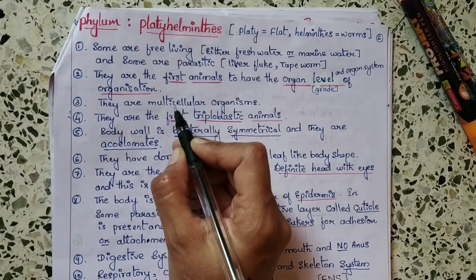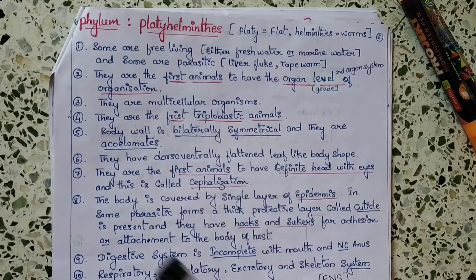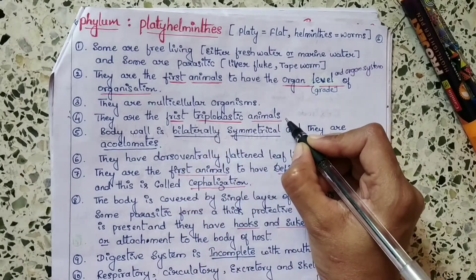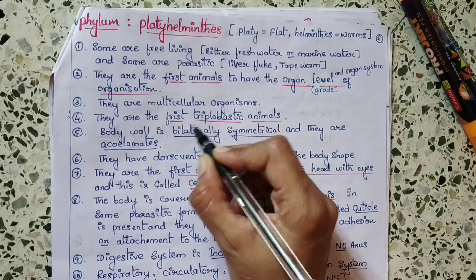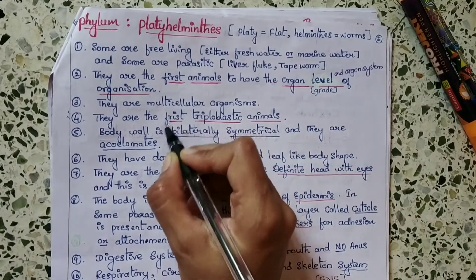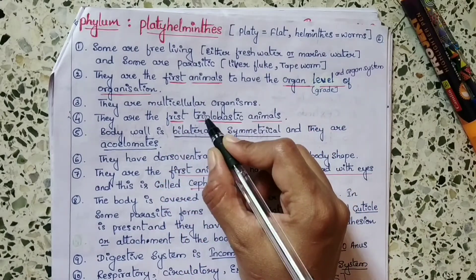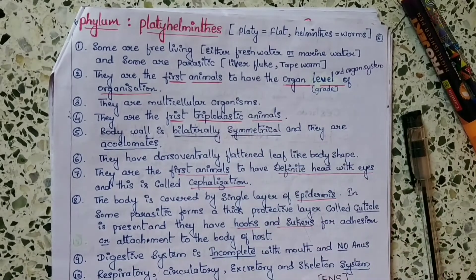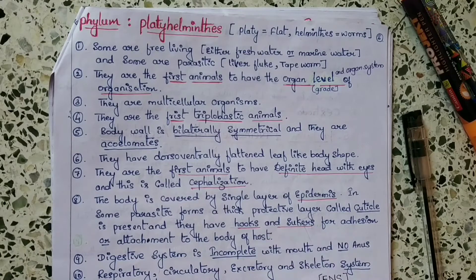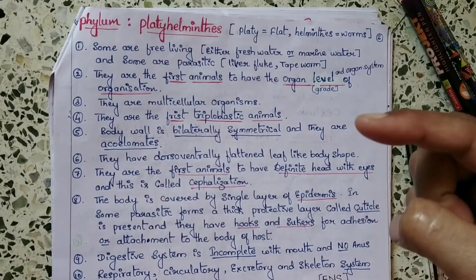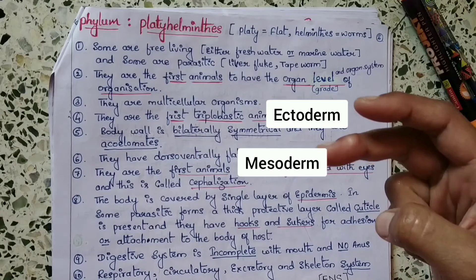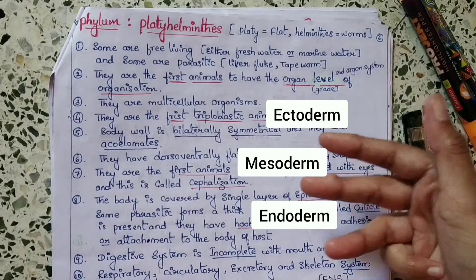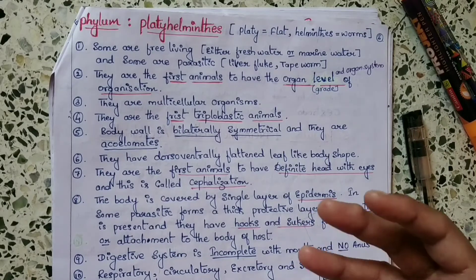These are multicellular organisms and they are the first triploblastic animals. Triploblastic means three layers. These Platyhelminthes are composed of three layers: the first one is ectoderm, mesoderm, and endoderm. So the body is composed of three layers.